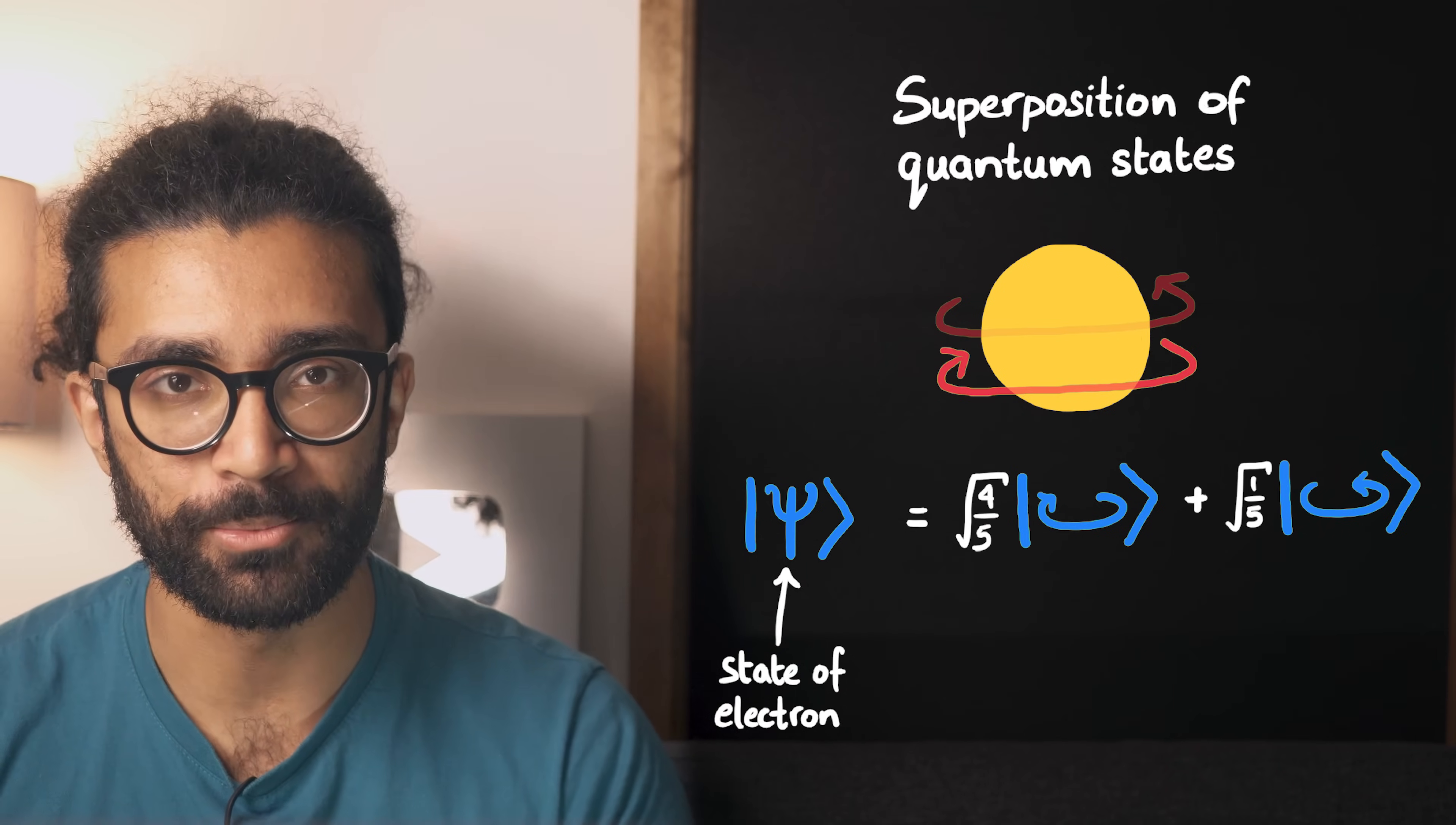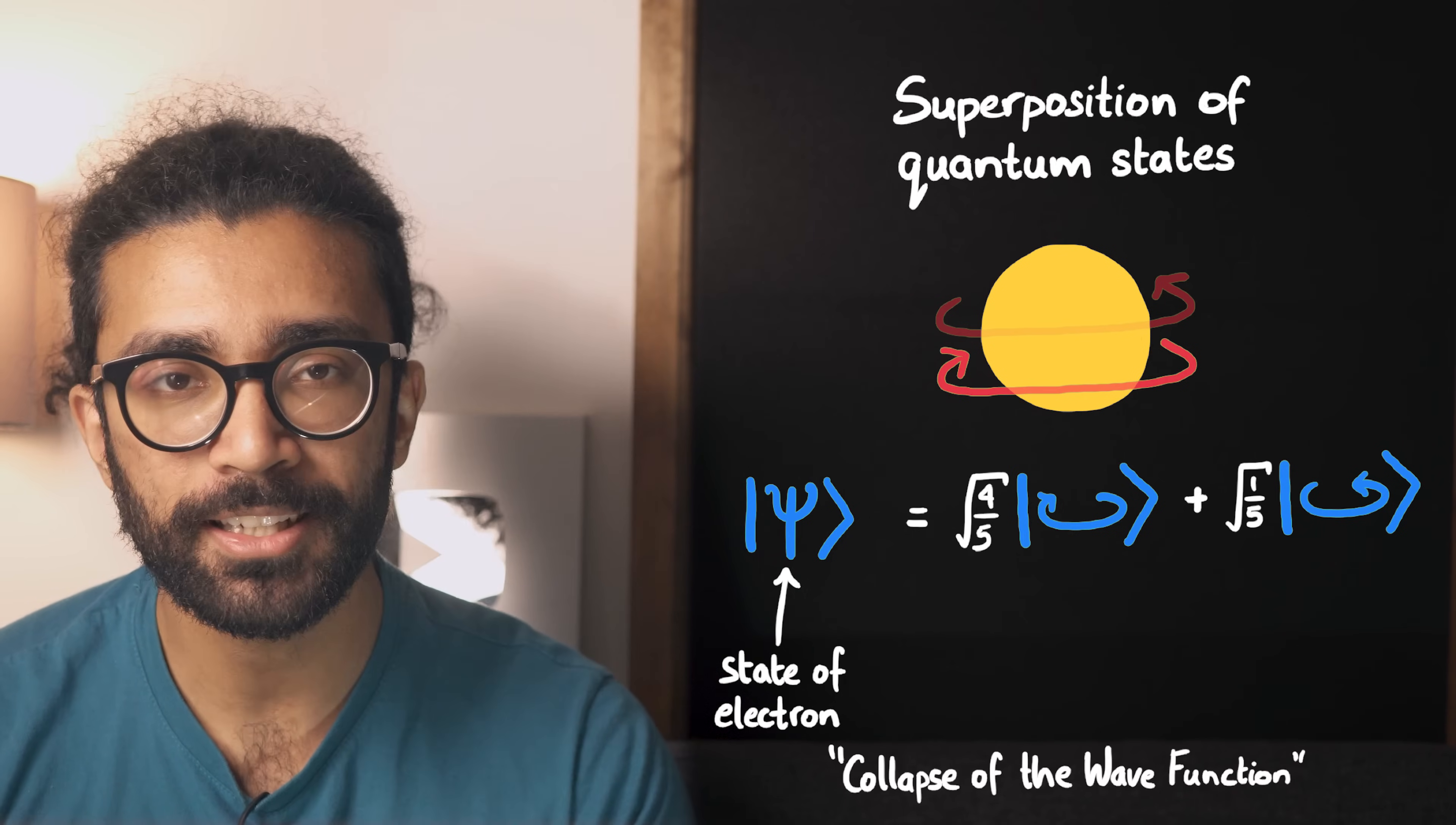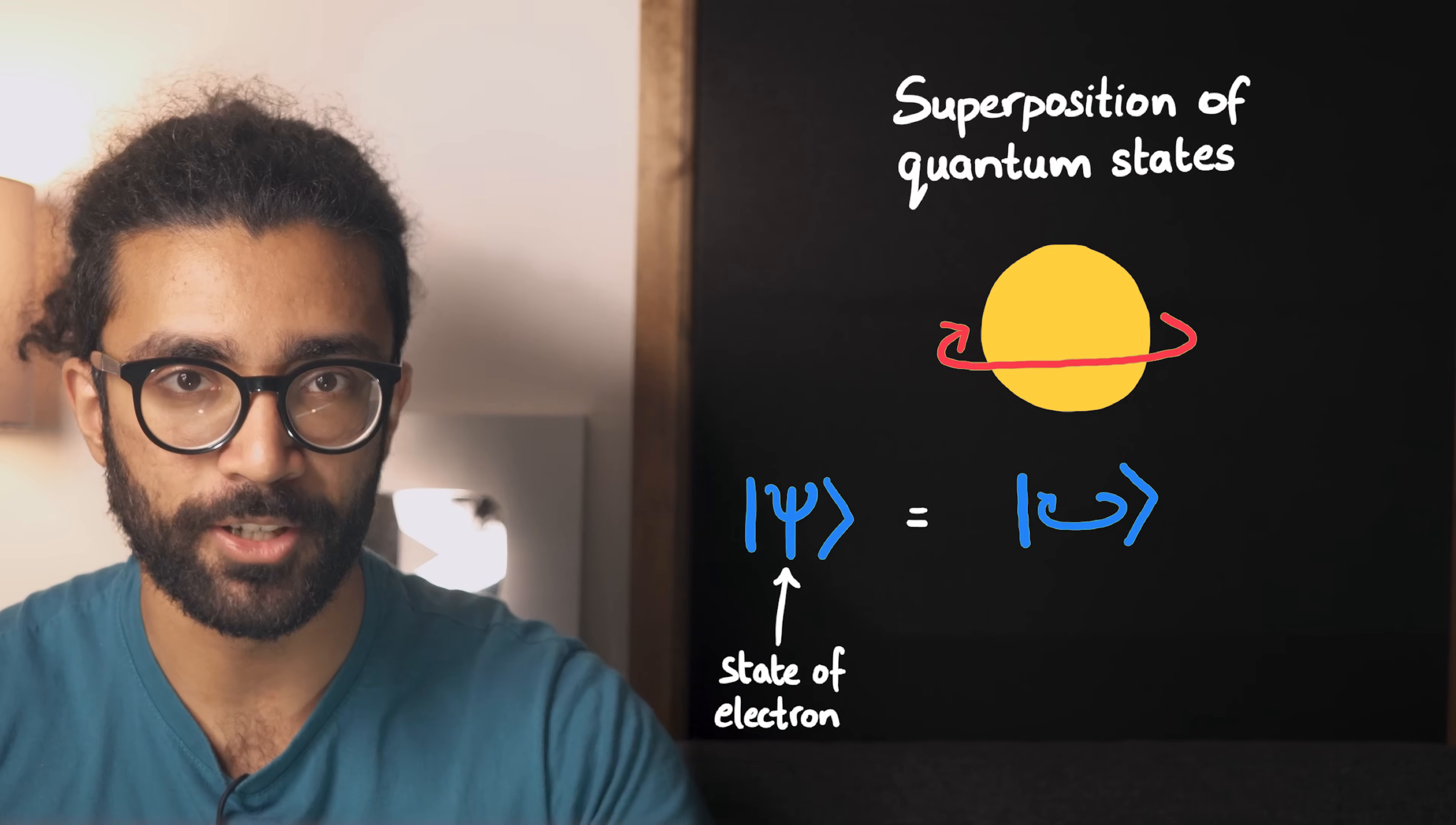In reality, what this means is that the electron has some probability of being found in either state when we make our spin measurement. And this is exactly what happens when we make our measurement on a non-eigenstate. By some random process that we don't yet fully understand, a measurement causes the state to change into one of the eigenstates.